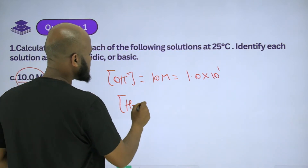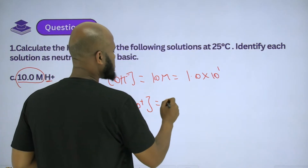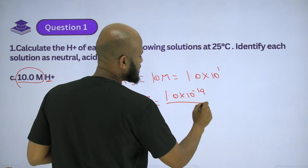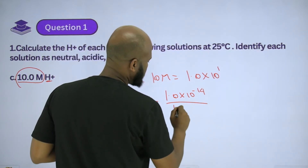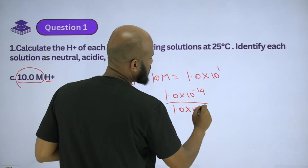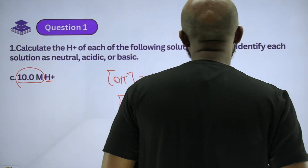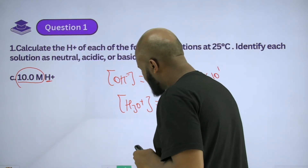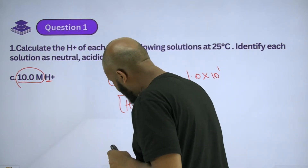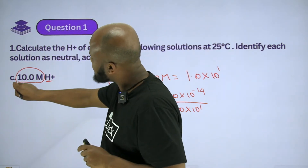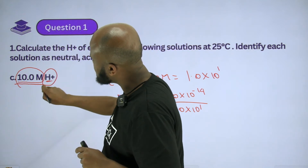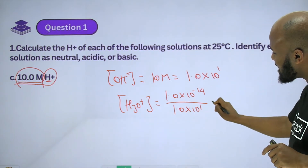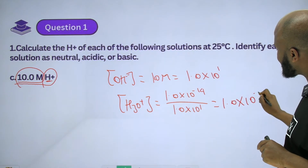The concentration of H3O⁺ is equal to 1.0×10⁻¹⁴ divided by 1.0×10⁻¹. That gives 1.0×10⁻¹³. Now here is 10 molar of H⁺, so the OH⁻ concentration equals 1.0×10⁻¹⁵.